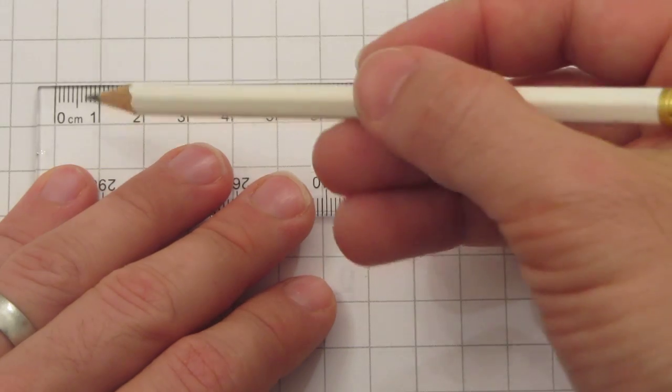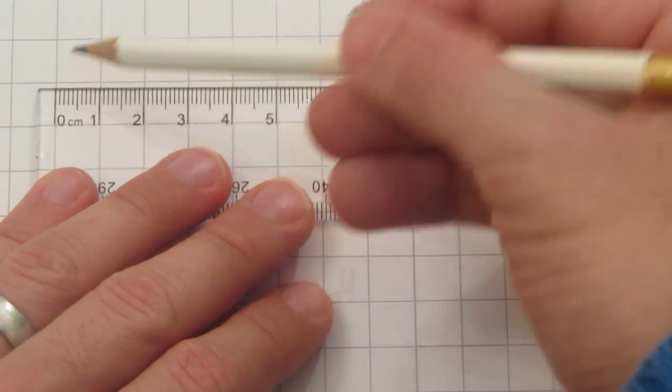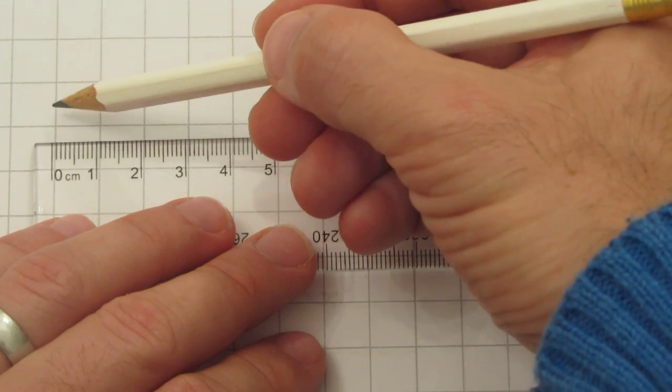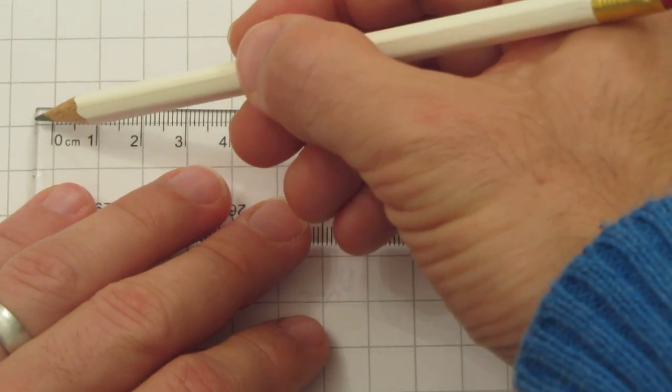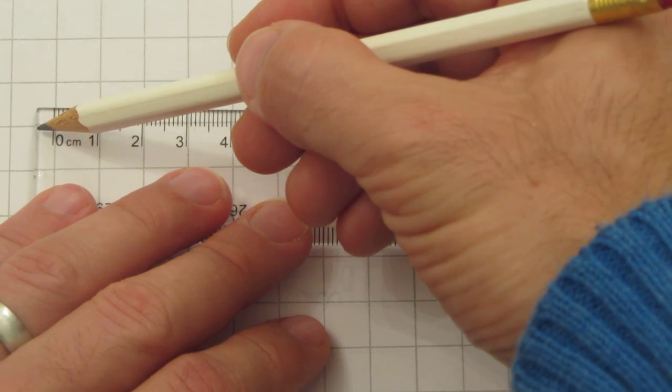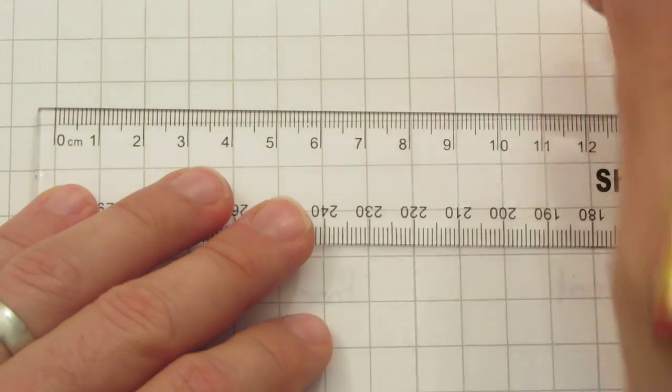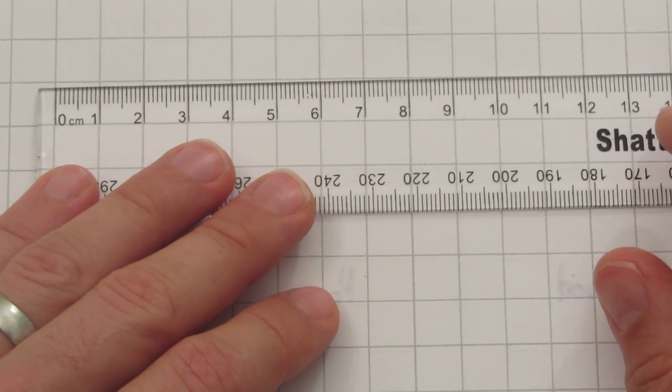So I line up the zero on the ruler with one of the lines on the page. Notice that I'm not using the end of the ruler because that's not where the zero starts. The zero starts there where it says zero. I line that up in the right place.